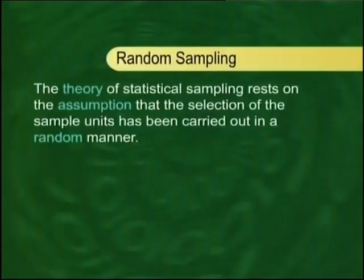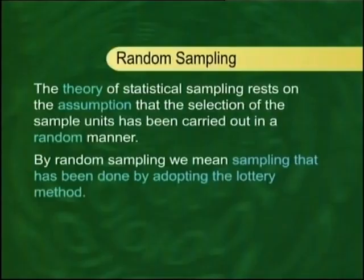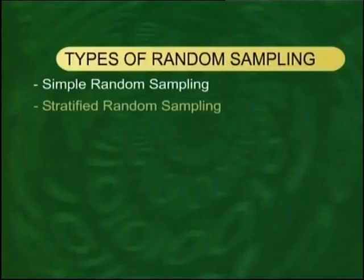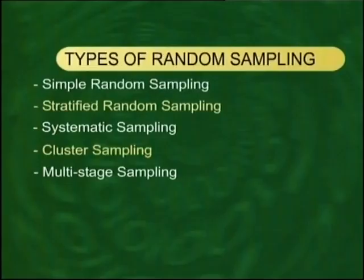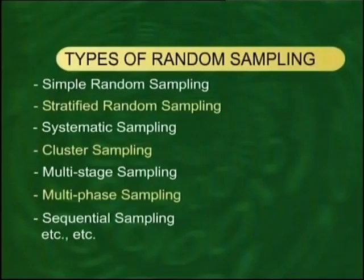Random sampling is the one in which you select your sample by the lottery method — that is the simplest way of saying it. In this category, we have a number of types of sampling such as simple random sampling, stratified random sampling, systematic sampling, cluster sampling, multi-stage sampling, and so on. In this course, I will be focusing on the simplest kind of random sampling, and that is simple random sampling.